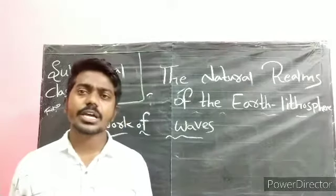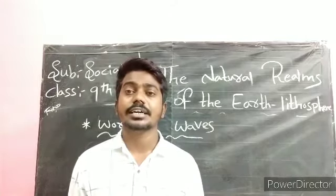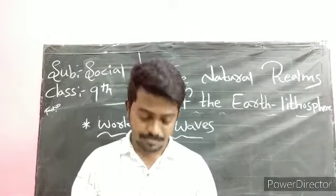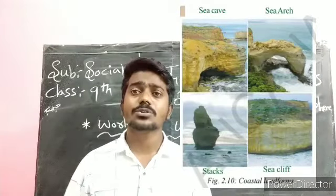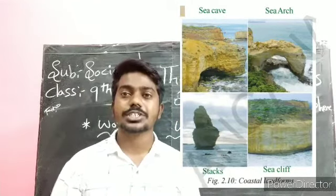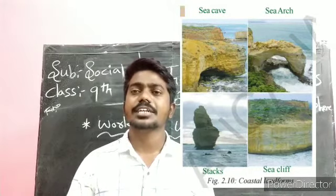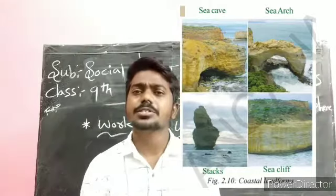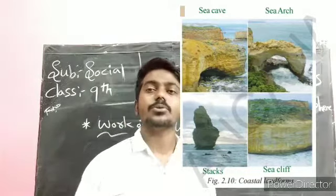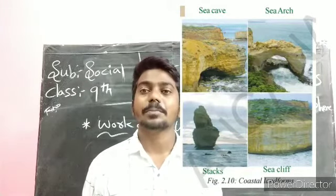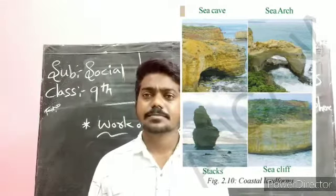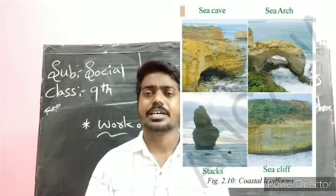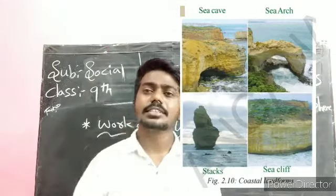Coming to the next topic: work of waves. Sea waves come with heavy force and continuously hit the rocks. First, cracks develop in the rocks. Gradually the waves hit with heavy force and hollow caves are formed. The cracks get bigger and bigger until we can see the roof of the rock — these are called sea arches. After further erosion, the roof of the caves is lost and only the walls remain — these are called stacks. The steep rocks rising vertically from the seawater are called sea cliffs.